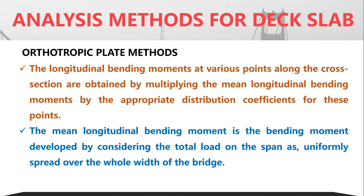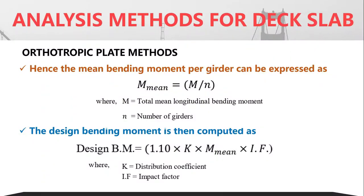From the corresponding distribution coefficients obtained from the curves, we obtain the longitudinal bending moments at various points along the cross section by multiplying the mean longitudinal bending moment by the appropriate distribution coefficient. The mean longitudinal bending moment is developed by considering the total load on the span as uniformly spread over the entire width. The mean bending moment per girder is M_mean = M/N, where M is the total mean longitudinal bending moment and N is the number of girders. The design bending moment equals M_mean × K (distribution coefficient) × IF (impact factor), increased by 10% as postulated by Masonette.